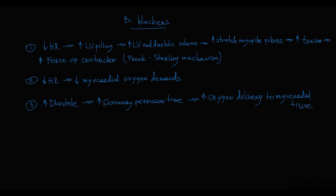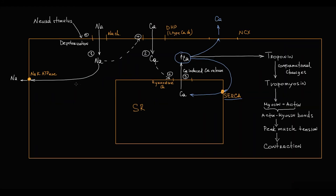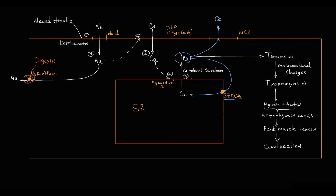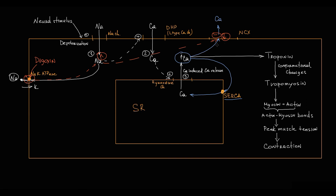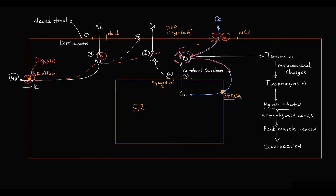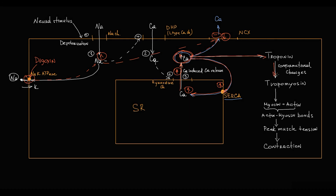By the way, this increase in force of contraction due to increased intracellular calcium level also occurs when we prescribe digoxin, a drug used in patients with heart failure. Digoxin blocks sodium-potassium ATPase on the cellular membrane, which normally pumps sodium out of the cell and potassium into the cell. Blocking it causes increasing intracellular sodium, which decreases the activity of the sodium-calcium exchanger. Thereby, less calcium exits the cell, so intracellular calcium increases. This increased calcium is taken up by SERCA protein into the sarcoplasmic reticulum, and during the next contraction, more calcium is released into the cytoplasm, resulting in a higher force of contraction.